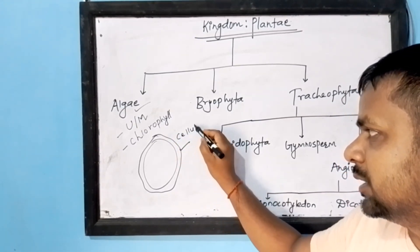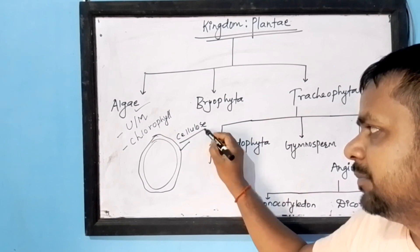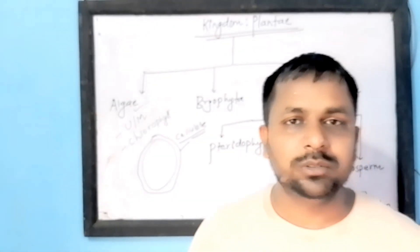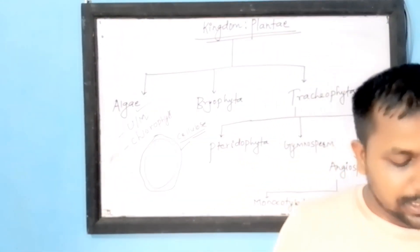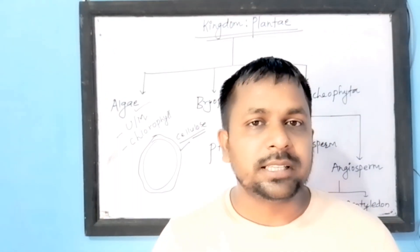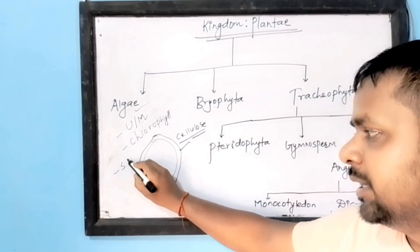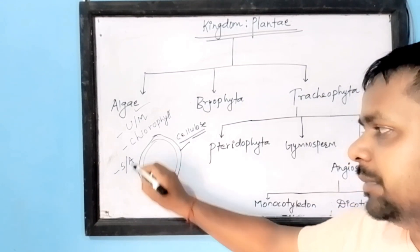The cell wall of algae is made up of cellulose. Reproduction in algae can take place by both sexual and asexual methods.